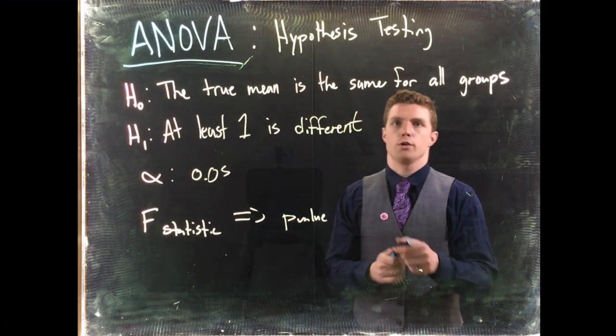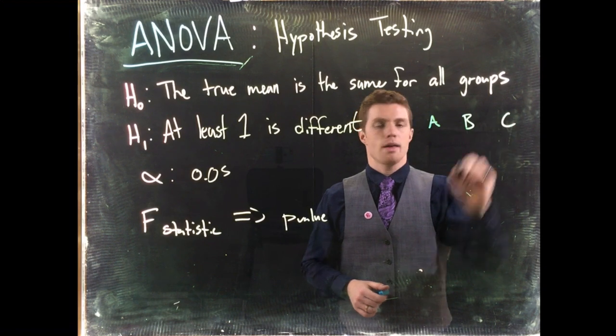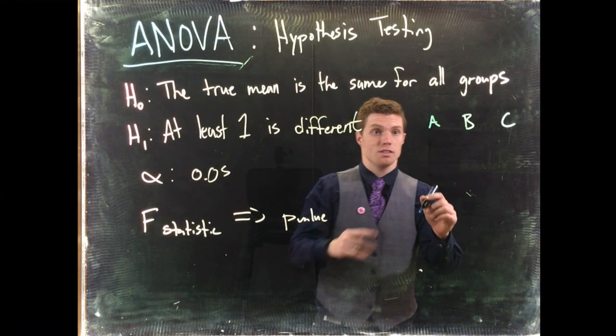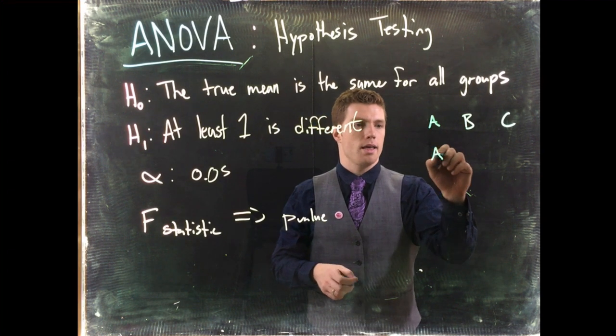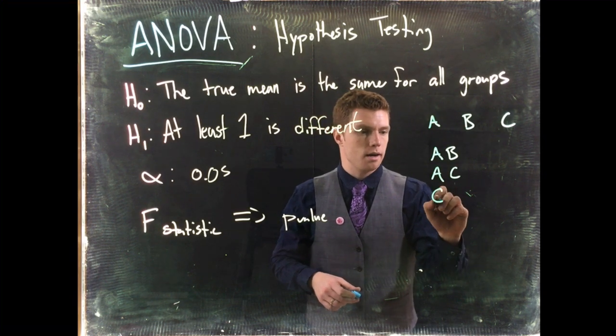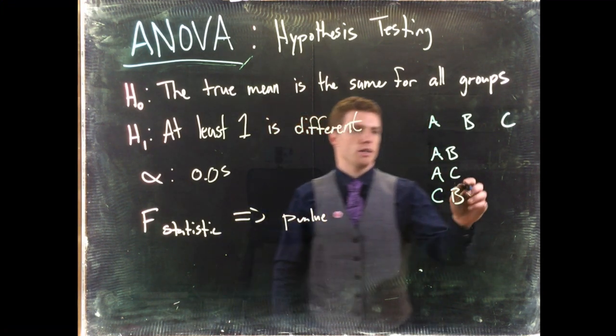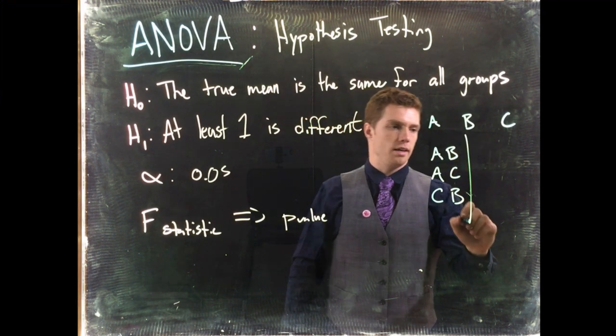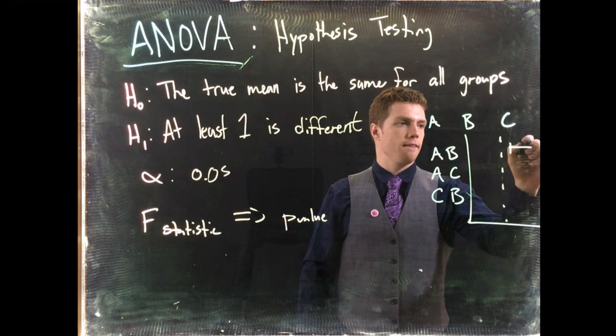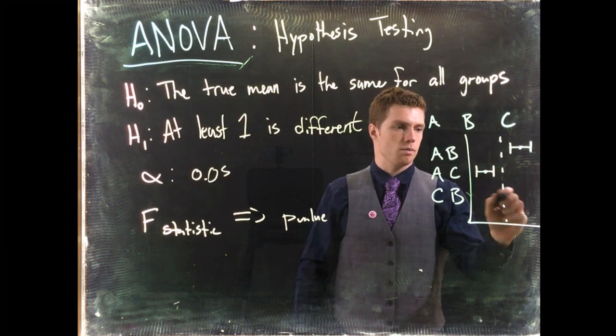So for example, let's say we have three different groups. So we've got group A, we have group B, and we have group C. Well, if at least one is different, we've got to do this comparison. We've got to compare A to B, we've got to compare A to C, and we've got to compare C to B. And each of those are going to have some corresponding confidence intervals that look like something like this.